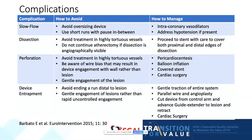Device entrapment is a rare but known complication of atherectomy devices. It is important to avoid ending a run distal to the lesion and to engage the lesion gently rather than rapidly, in order to prevent uncontrolled engagement and slipping past the lesion without actually treating it. Should device entrapment occur, gentle traction of the entire system typically is able to relieve the entrapment. However, alternative approaches such as a parallel wire and angioplasty, or more aggressive interventions such as cutting the device away from the control arm and advancing a guide extender to the lesion and retracting, may be necessary. In rare cases, cardiac surgery may be required.